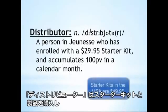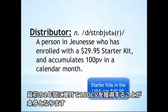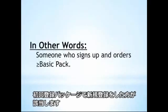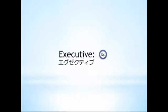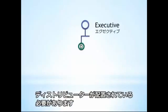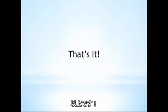A distributor is someone who enrolls in the opportunity with the $29 starter kit and accumulates at least 100 points in personal volume during a calendar month — basically, someone who signs up and orders a basic pack or more. To become an executive with Jeunesse, all you have to do is enroll one distributor on your left side and one on your right side. That's it — you're an executive.